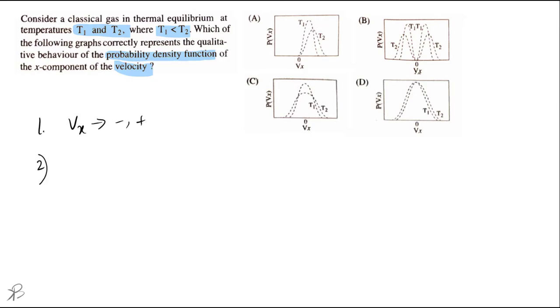The second point is if you remember the expression for the distribution function, that is the probability distribution function, it looks something like this: f(vx) equals (m/2πkT) exponential minus v square by 2kT. So this is how the expression looks, so a few important points from this expression.